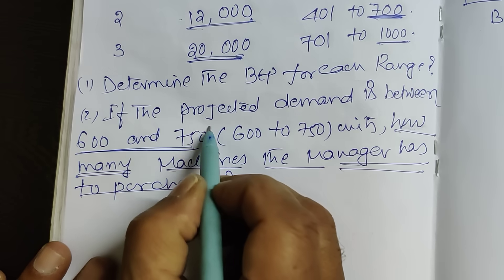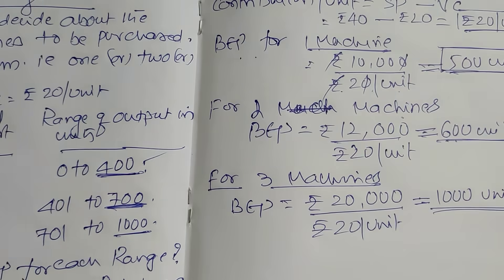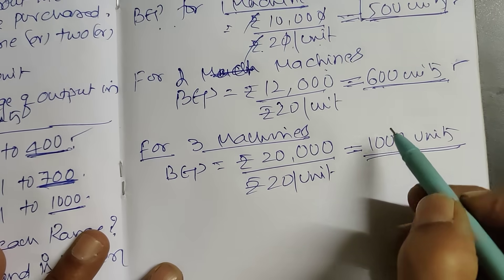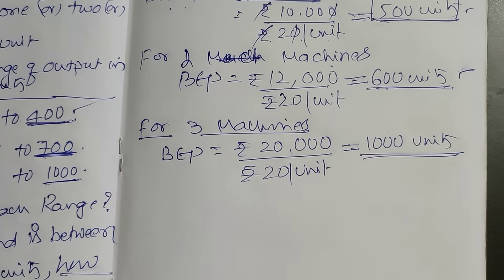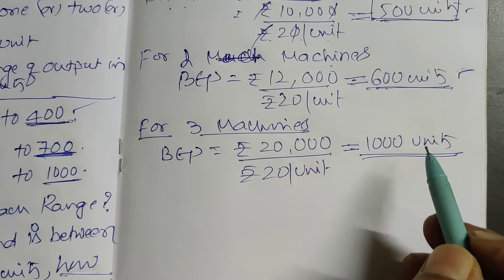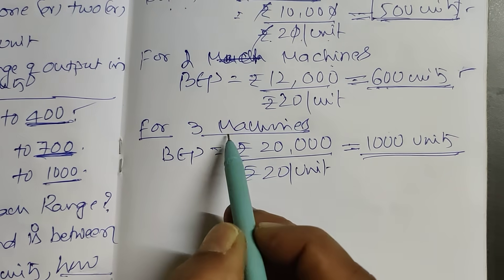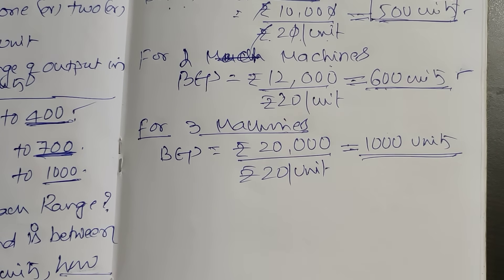If we consider the upper limit of the projected demand, which is 750 units, that is less than 1,000 units — which is the breakeven point for three machines. Therefore, purchasing three machines is also ruled out.